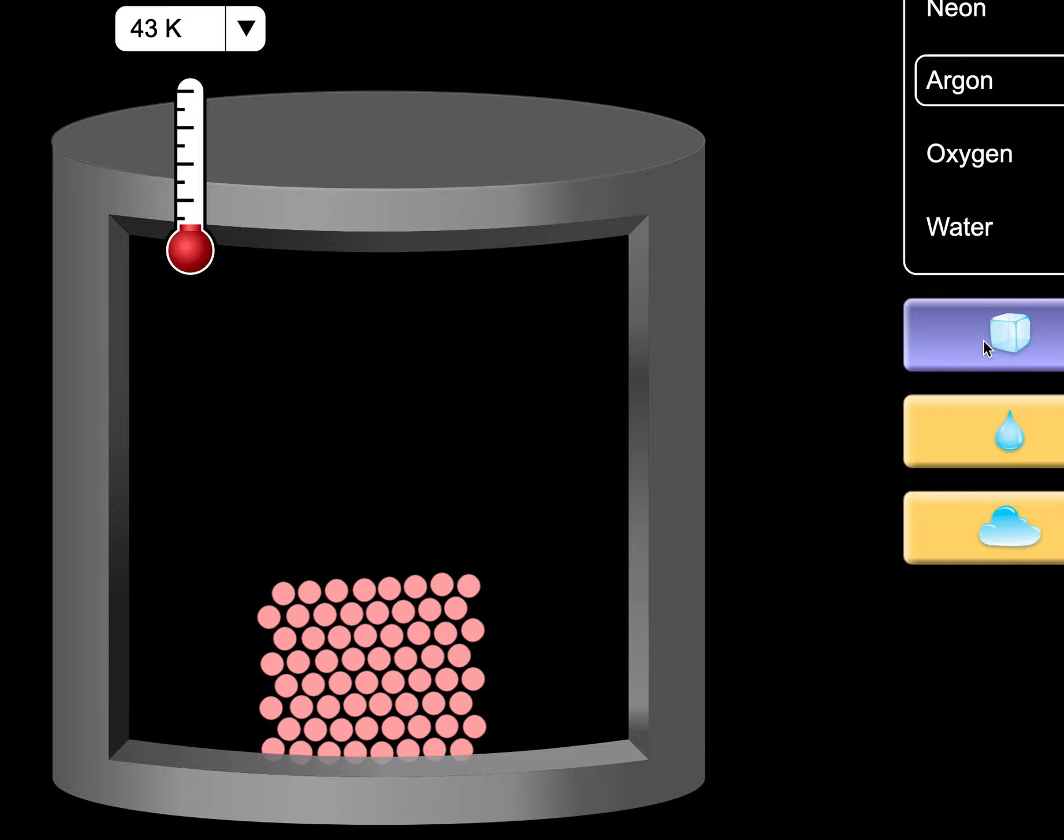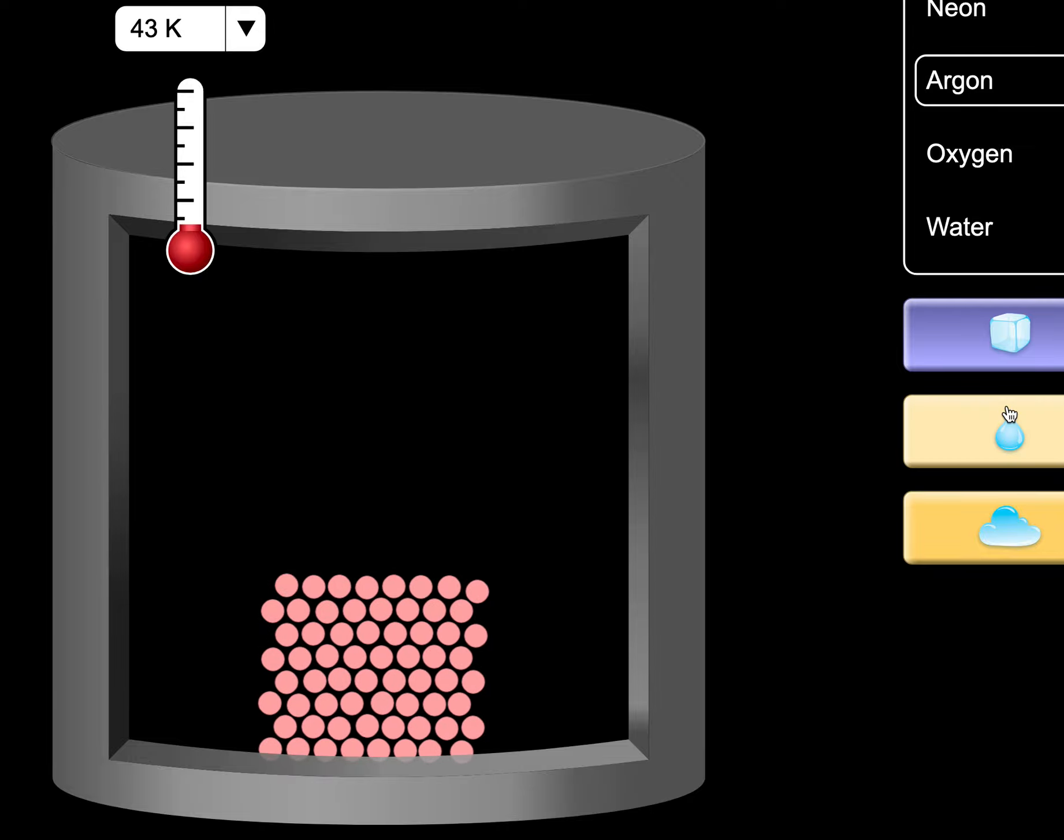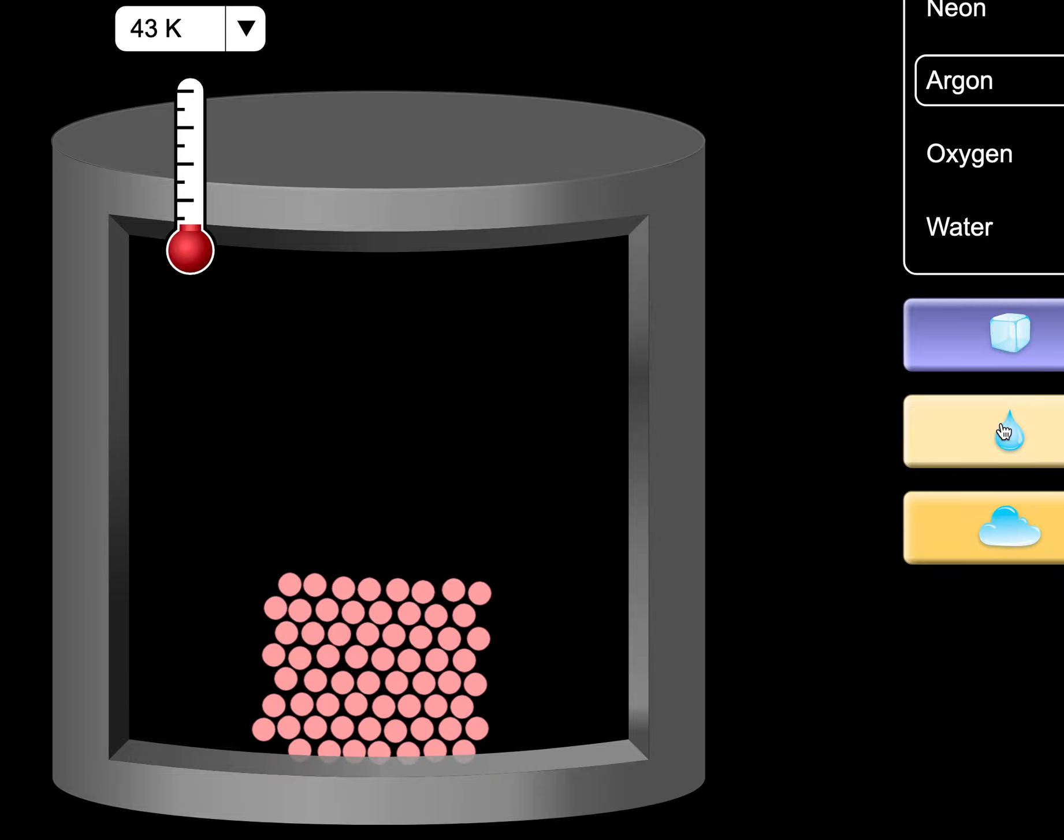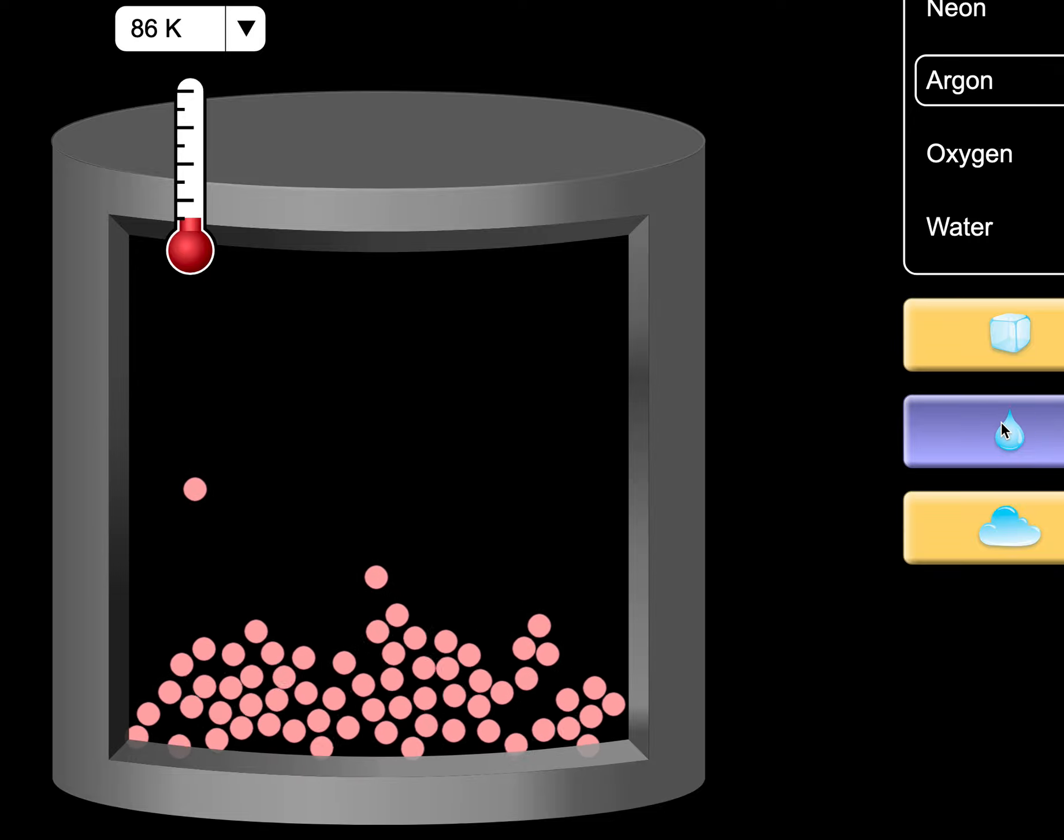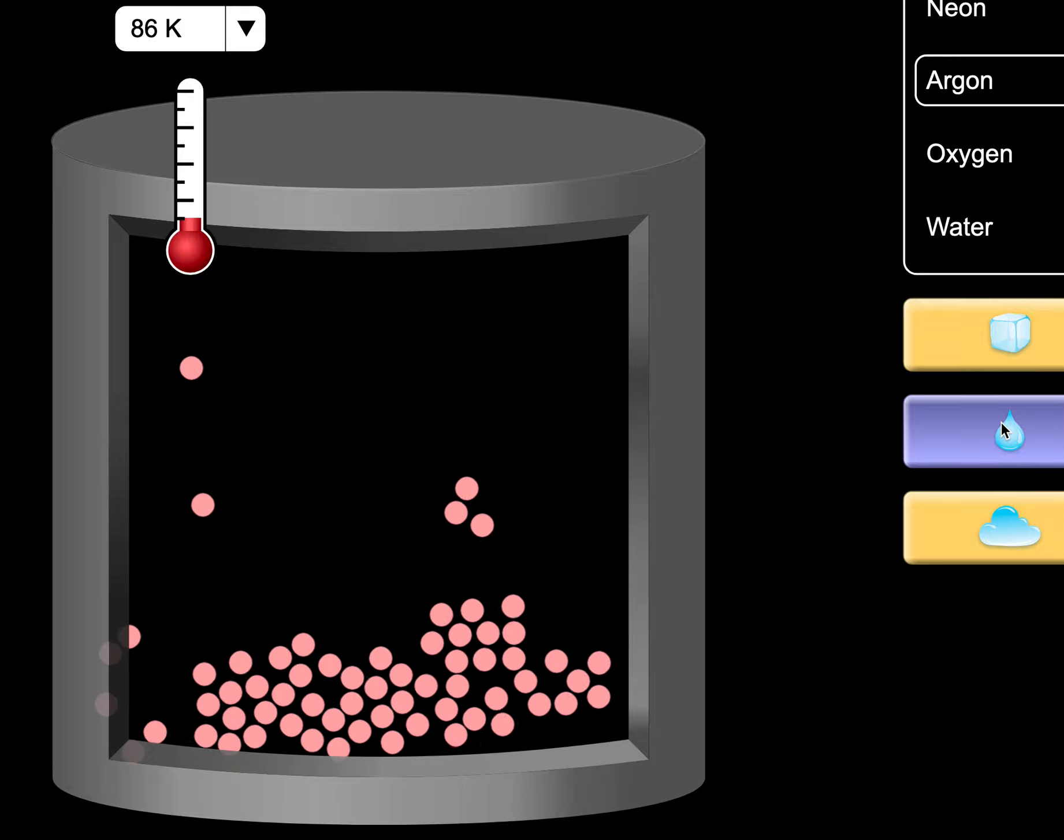From a solid, add this energy we call the heat of fusion. It's a smart aleck way of saying the energy required to melt, the energy required to break the solid intermolecular forces, but not all of them. There's my liquid.